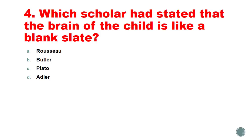Which scholar stated that the brain of the child is like a blank slate? A blank slate means tabula rasa — John Locke said this basically in the 17th century. The options are Rousseau, Butler, Plato, or Adler. Since Locke is not given here, behaviorists think that blank slate means you can give it any shape. Many people have supported this view. So the answer will be Plato.